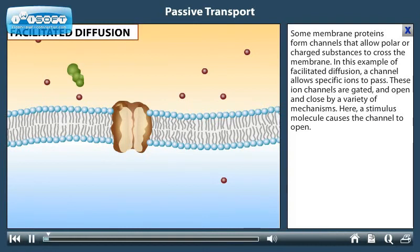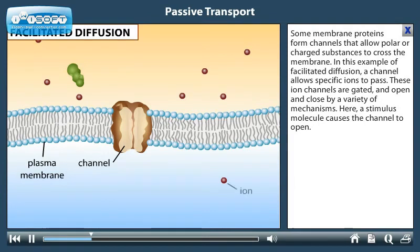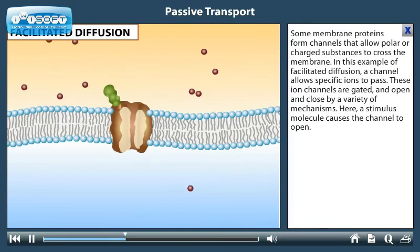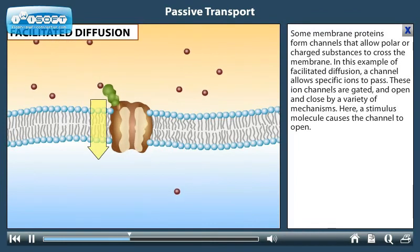Some membrane proteins form channels that allow polar or charged substances to cross the membrane. In this example of facilitated diffusion, a channel allows specific ions to pass. These ion channels are gated and open and close by a variety of mechanisms. Here, a stimulus molecule causes the channel to open.